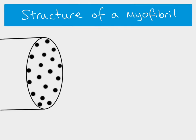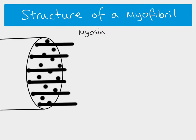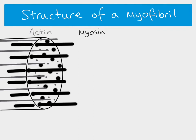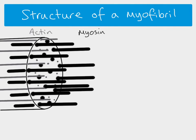There are lots of myofibrils in a muscle fiber. Shown here in three dimensions, you can see the myosin filaments extending throughout, and then the actin filaments going the other way. The myofibril is simply all of those protein filaments arranged together — there's nothing surrounding it.